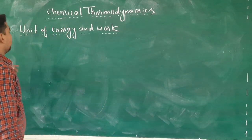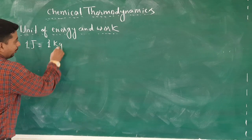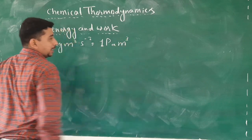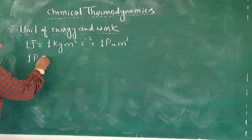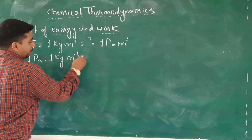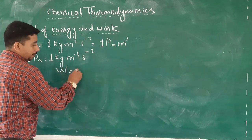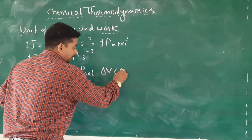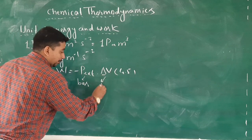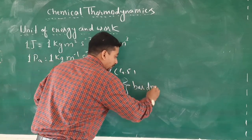Hello students, let us continue with the chemical thermodynamics units of energy and work. 1 joule is equal to 1 kilogram meter squared per second squared, which is equal to 1 pascal meter cube. Now according to equation number 4.5, work done is given by w = −P_ext × ΔV. If the external pressure is taken in bar and the volume change is taken in dm³, then the unit of work done will become bar·dm³.